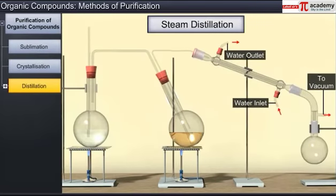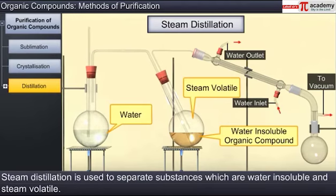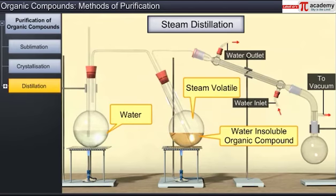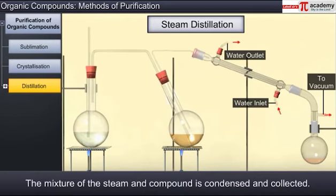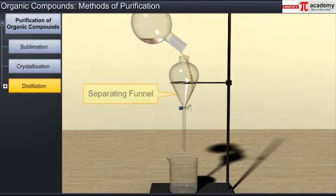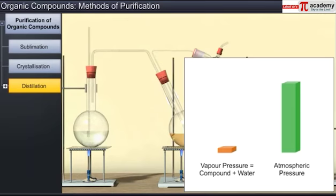Another distillation process, steam distillation, is used to separate substances that are immiscible with water and steam volatile — that is, substances that get evaporated when steam is passed through them. In this process, the liquid to be distilled is kept in a heated flask and steam from the steam generator is passed through it. The mixture of steam and the compound is condensed and collected. The compound is then separated from water using a separating funnel. In steam distillation, the liquid boils when the sum of the vapor pressures due to the organic liquid and due to water becomes equal to the atmospheric pressure.